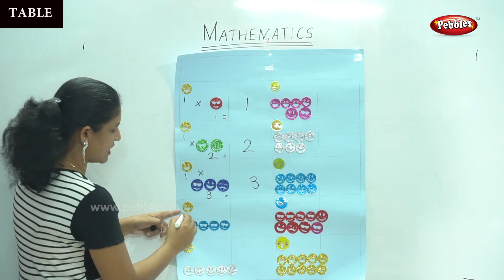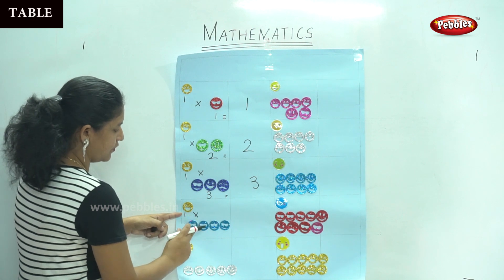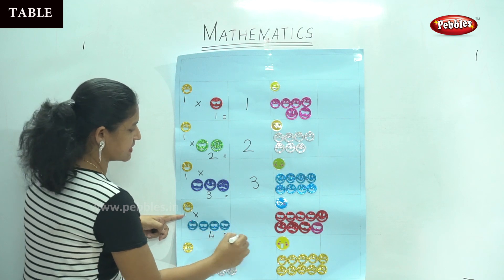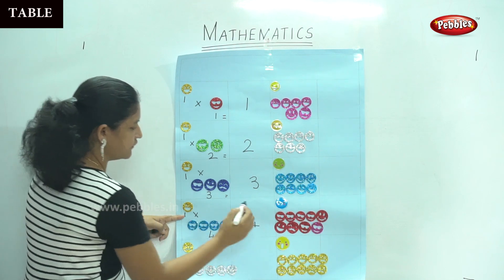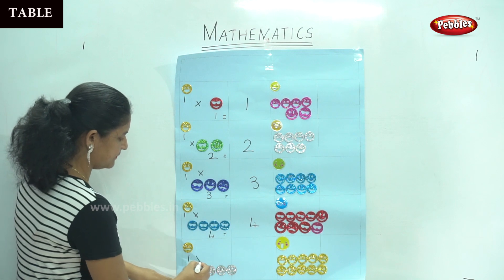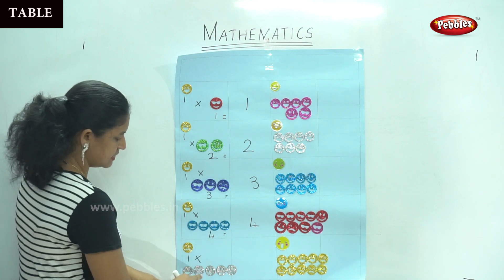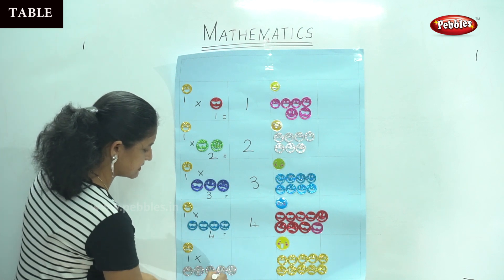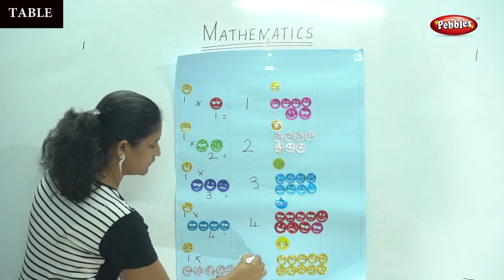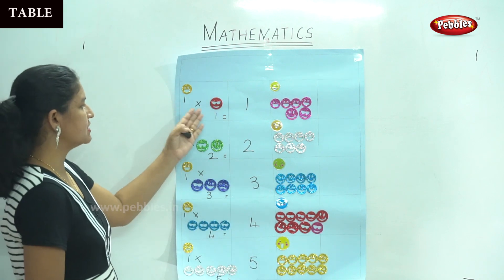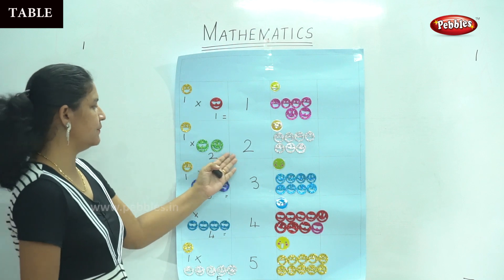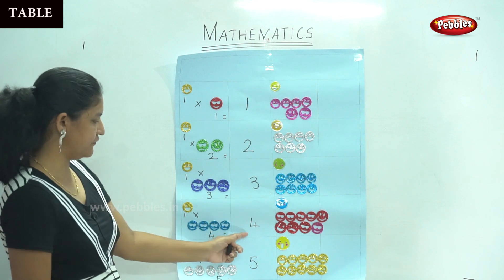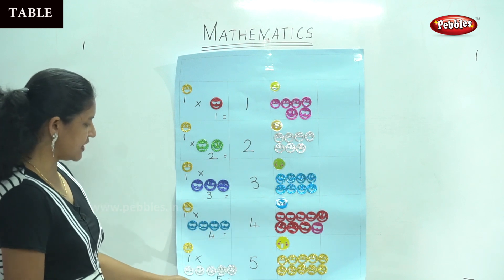We have 1 time, 1, 2, 3, 4 smiley faces — that gives us number 4. Next we have 1 time, 1, 2, 3, 4, 5 smiley faces — that gives us number 5. So: 1 times 1 is 1, 1 times 2 is 2, 1 times 3 is 3, 1 times 4 is 4, 1 times 5 is 5.